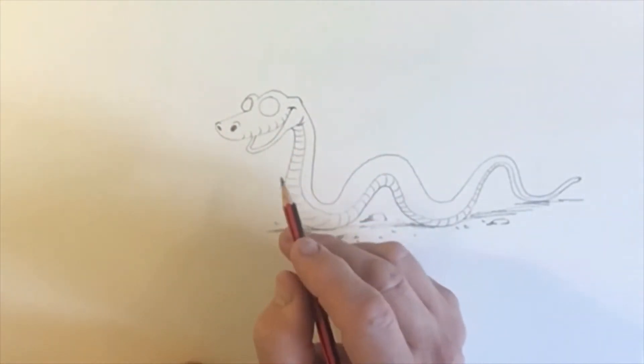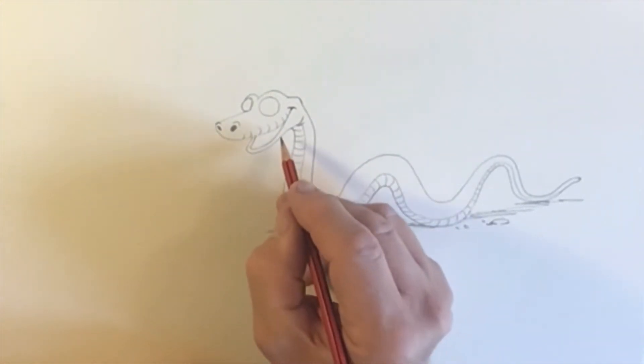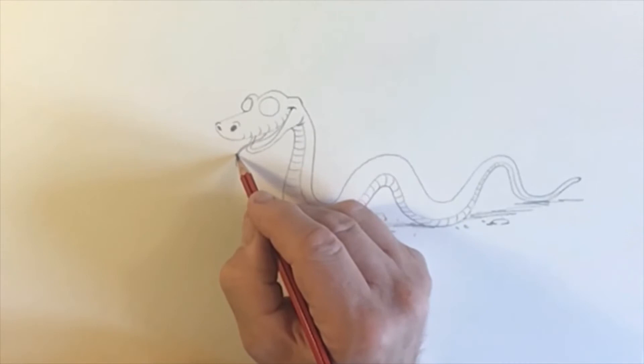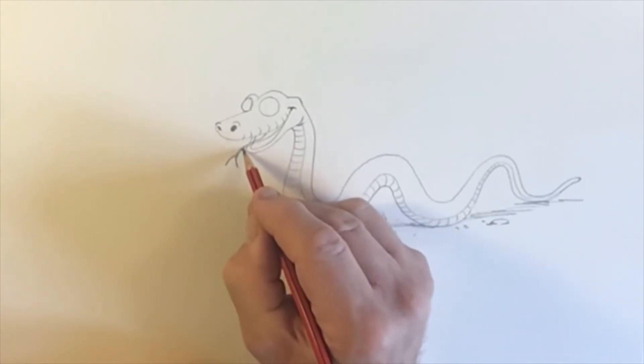Now snakes have that forked tongue, don't they? So if we have a tongue coming from the back of his mouth over here, all the way over here, and then bend it downwards, it's a bit thicker at the back and thinner at the front, and then when it gets to the end, you're going to stick one bit going that way, and one bit going that way. A little forked tongue.